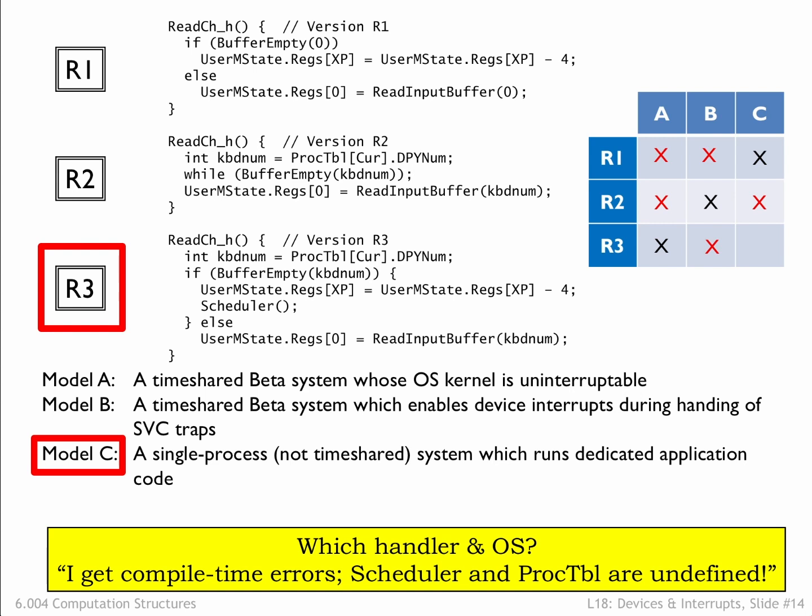Since Model C doesn't support time-sharing, it would have neither scheduler nor proc table as part of the OS code.